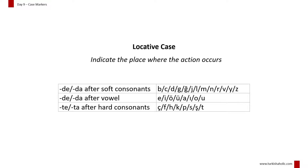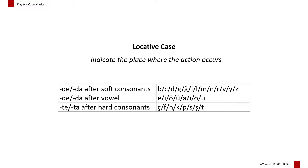The locative case is used to indicate the place where the action occurs. It can also be used to indicate the time the action occurs. The locative case marker in Turkish is -de, -da, -te, -ta, which usually corresponds to 'in', 'at', or 'on' in English.